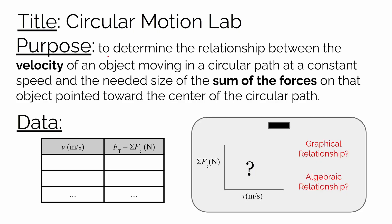Let's get a formal purpose statement for our circular motion lab. Our purpose is to determine the relationship between the velocity of an object moving in a circular path at a constant speed and the needed size of the sum of the forces, which must be pointed towards the center of the circular path. We'll collect data at different velocities, measure the tension as the net force, then graph the sum of the forces on the y-axis and velocity on the x-axis to find their graphical and algebraic relationship.